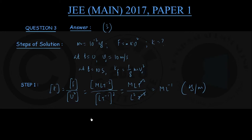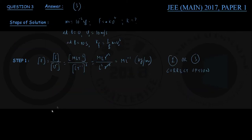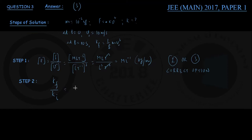The corresponding unit should be kg per meter. Looking at the options, both options 1 and 3 have this unit, so we didn't get a unique answer from dimensional analysis alone. Since two options share the unit kg per meter, in the next step we shall make use of the fact that kinetic energy after 10 seconds becomes (1/8)mV₀². We write the ratio of final kinetic energy Kf to initial kinetic energy Ki, where the formula for kinetic energy is half mv squared.